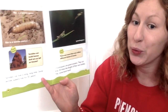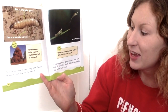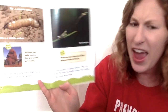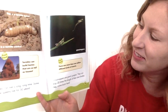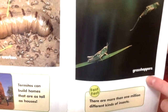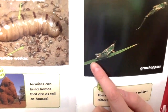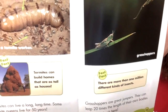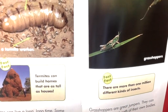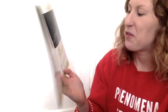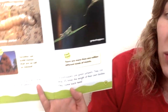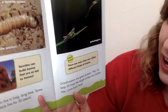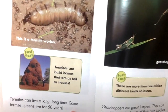Grasshoppers are great jumpers. They can leap 20 times the length of their own bodies. Here's a grasshopper — they were both sitting on that leaf together maybe hanging out, and then one just sprung away. Our fast fact says there are more than one million different kinds of insects on the planet. One million.